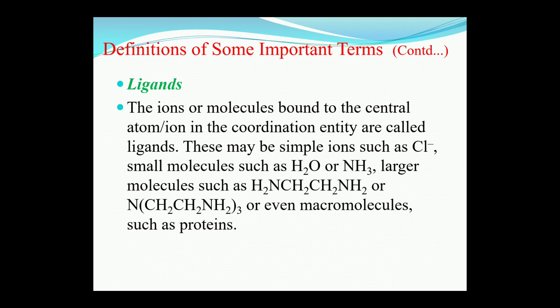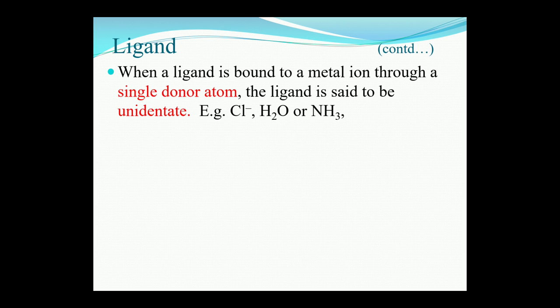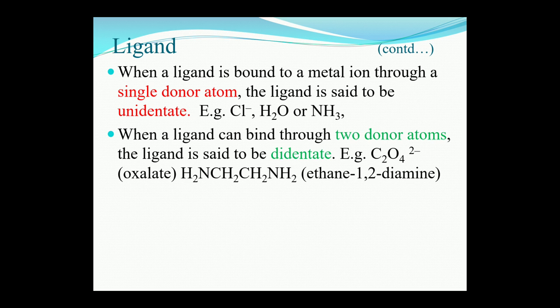What are ligands? The ligands are the ions or molecules that are bound to the central atom or ion in the coordination entity. These may be simple ions such as chloride ions, small neutral molecules like water and ammonia, or larger molecules like ethylenediamine (NH₂CH₂CH₂NH₂). When a ligand is bound to a metal ion through a single donor atom, the ligand is said to be unidentate — examples include chloride ion, water, and ammonia. When a ligand can bind through two donor atoms, it is said to be bidentate — examples are oxalate ion (C₂O₄²⁻) and ethane-1,2-diamine.